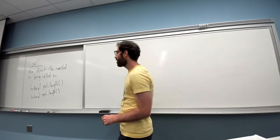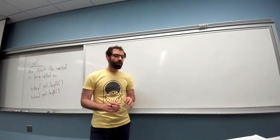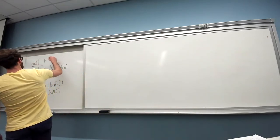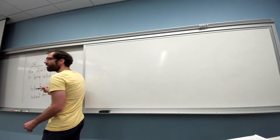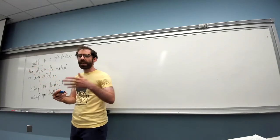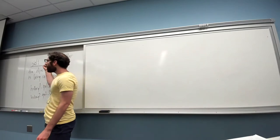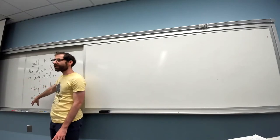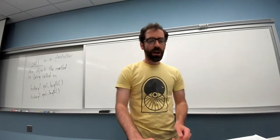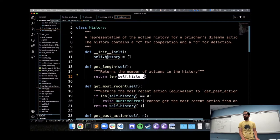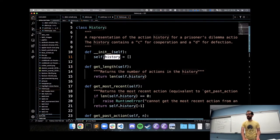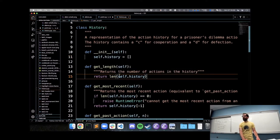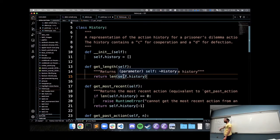By saying `self.history`, because `self` is standing in for whatever object we call it with, when we do `history1.get_length()` we're accessing `history1.history`, and when we do `history2.get_length()` we're accessing `history2.history`. Another important point about `self` is that we're used to thinking of functions as their own little world where any variable created only exists inside that function. But that's a big problem if we want an object that has data like a list or an x and y that needs to be used across multiple different methods.